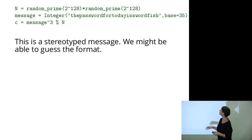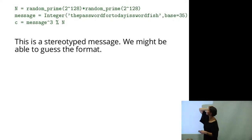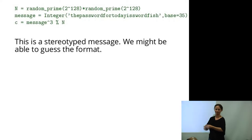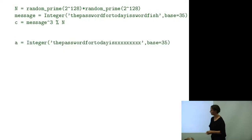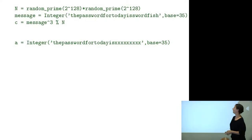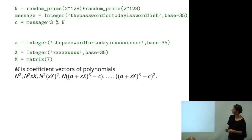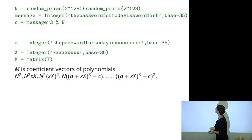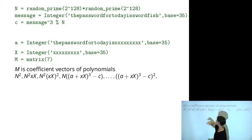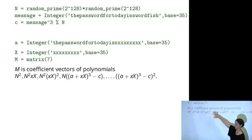What if the attacker knew that most of the message said 'the password for today is' with some unknown thing at the end? Here is our attacker's guess at the message: 'the password for today is' and some unknown string. I create a parameter X roughly the size of the thing I'm looking for, and then I create a matrix — though I couldn't actually fit the construction of the matrix here.